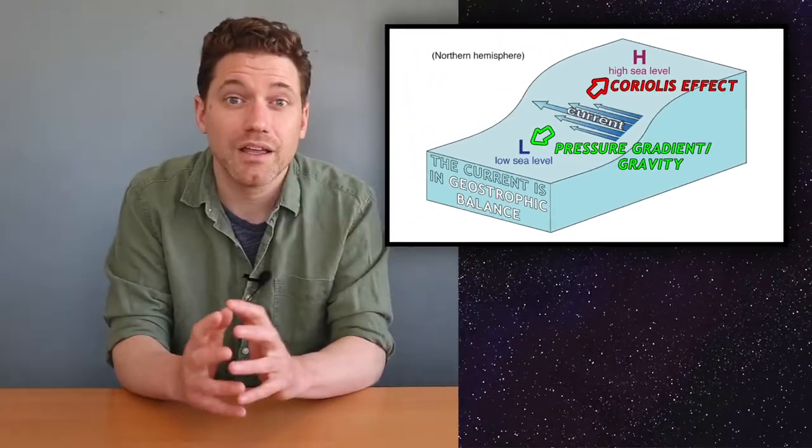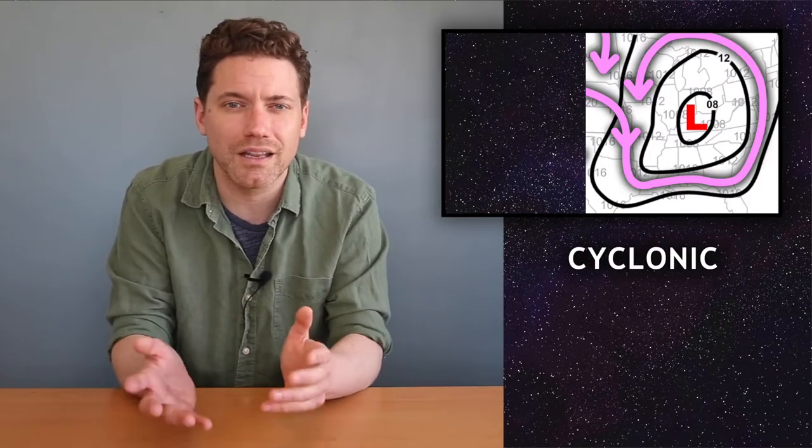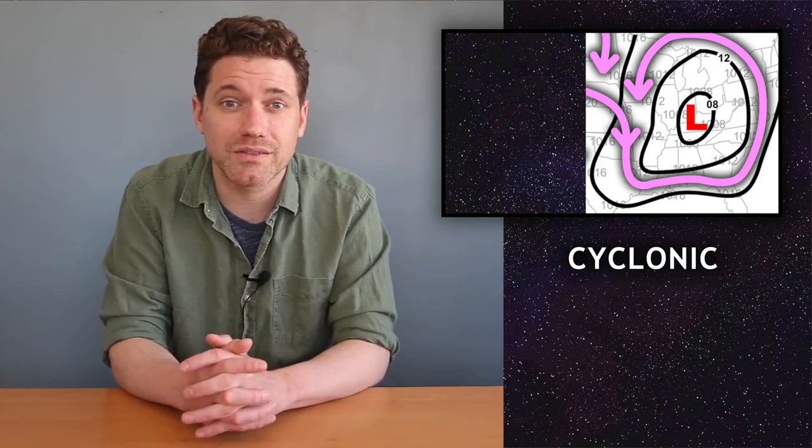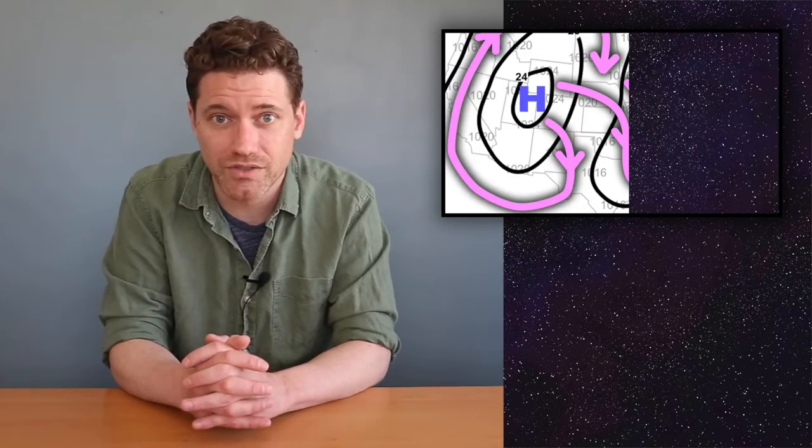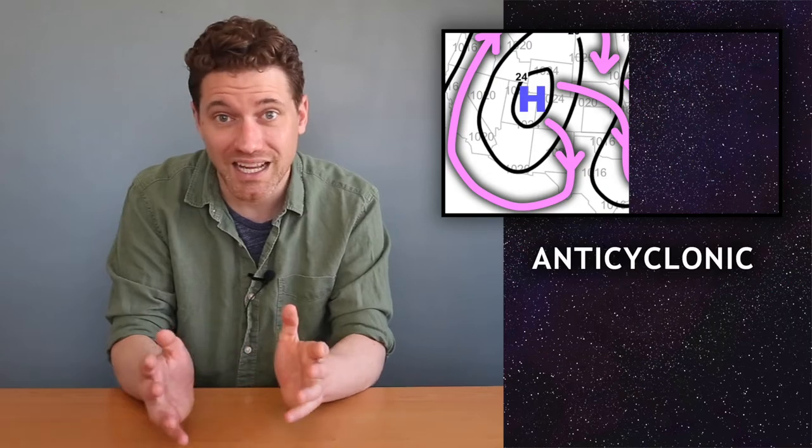In the northern hemisphere, these flows move counterclockwise around low pressure centers, known as cyclonic circulation, whereas they move clockwise around high pressure centers, and this flow is anticyclonic.